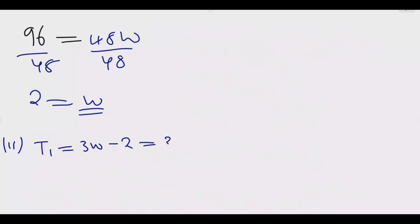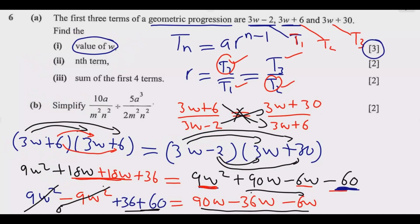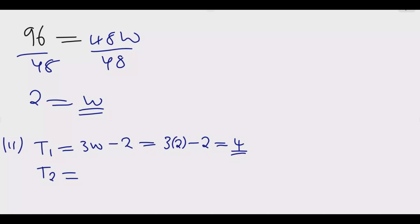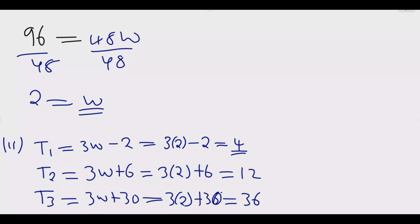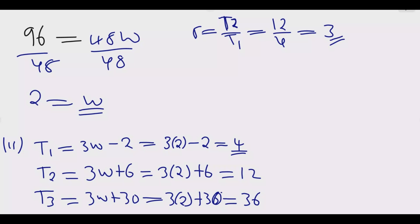Substituting w = 2: t1 = 3(2) − 2 = 4. Then t2 = 3(2) + 6 = 12. Then t3 = 3(2) + 30 = 36. The common ratio r = t2 ÷ t1 = 12 ÷ 4 = 3. We can verify: 36 ÷ 12 = 3. So r = 3, and the first term a = 4.